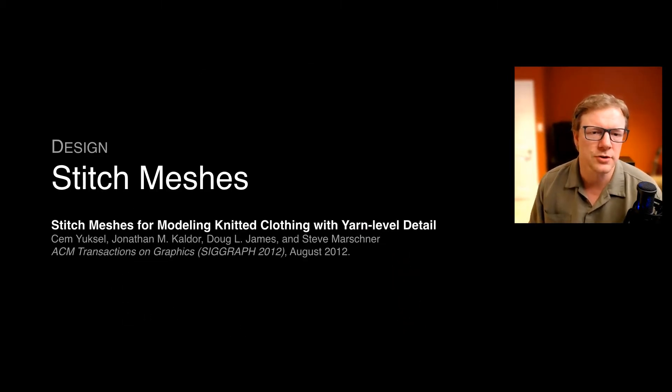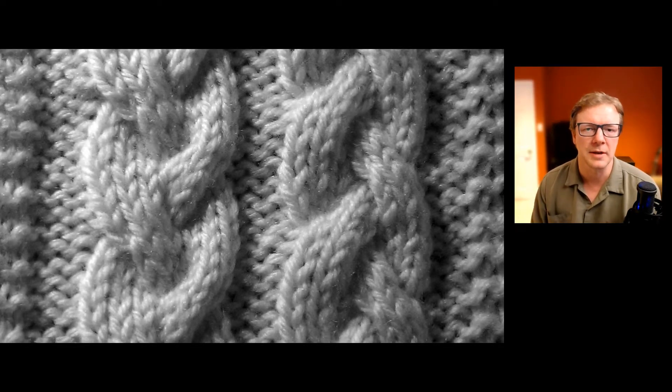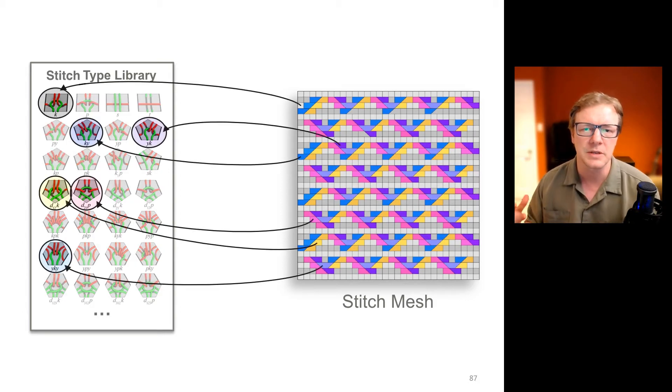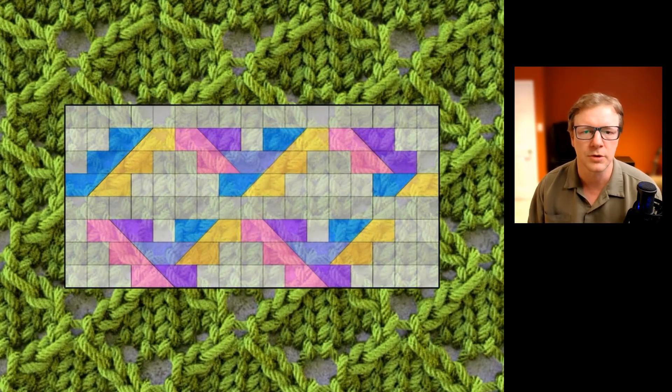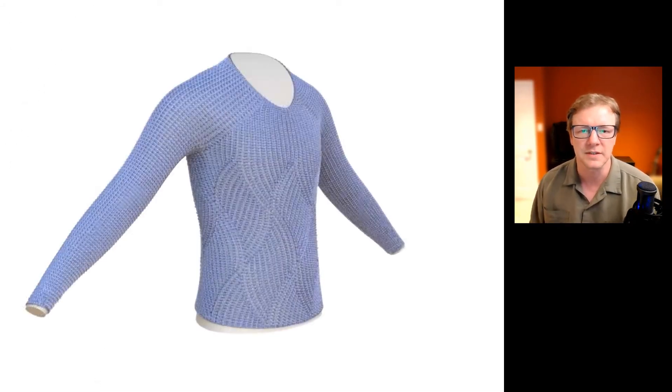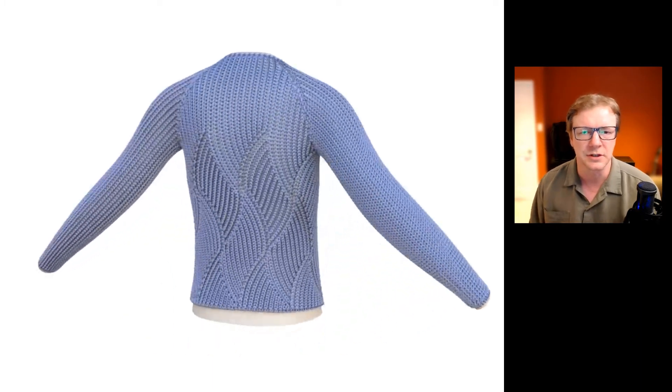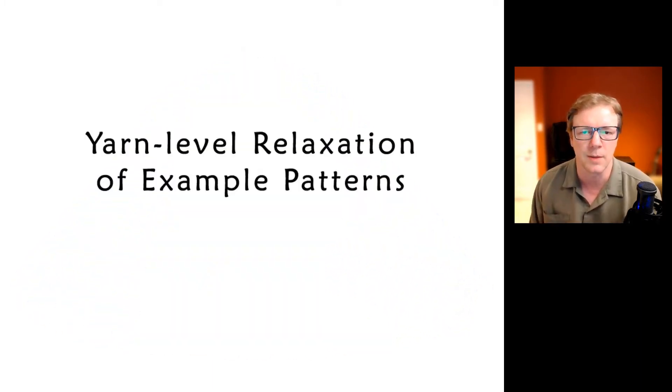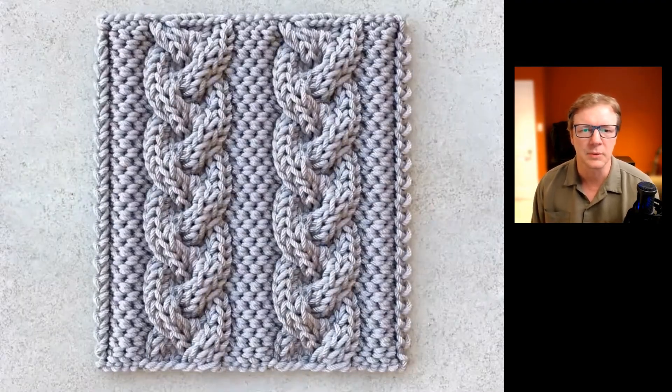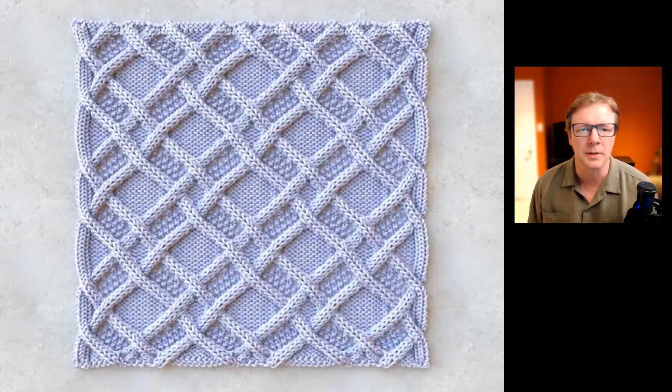Next, Cem Yuksel joined us and helped model more complicated patterns. His work on stitch meshes encoded topology using polygons, which could be easily used to model arbitrary patterns. And then these could be instantiated on geometry and inflated with physics in order to generate these interesting yarn level patterns that you just could not draw by hand. So this saved us from the simple scarves and blankets that we'd been working with and allowed us to have more complicated patterns.